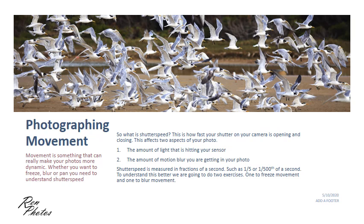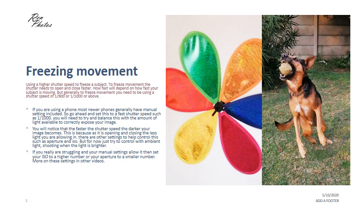To understand this better, we're going to do two exercises: one is to freeze movement, and one is to blur movement. So we're going to start off with the freezing movement. To freeze movement, we need to use a faster shutter speed. A faster shutter speed would be around one-eight-hundredth or one-one-thousandth of a second, as a good example.